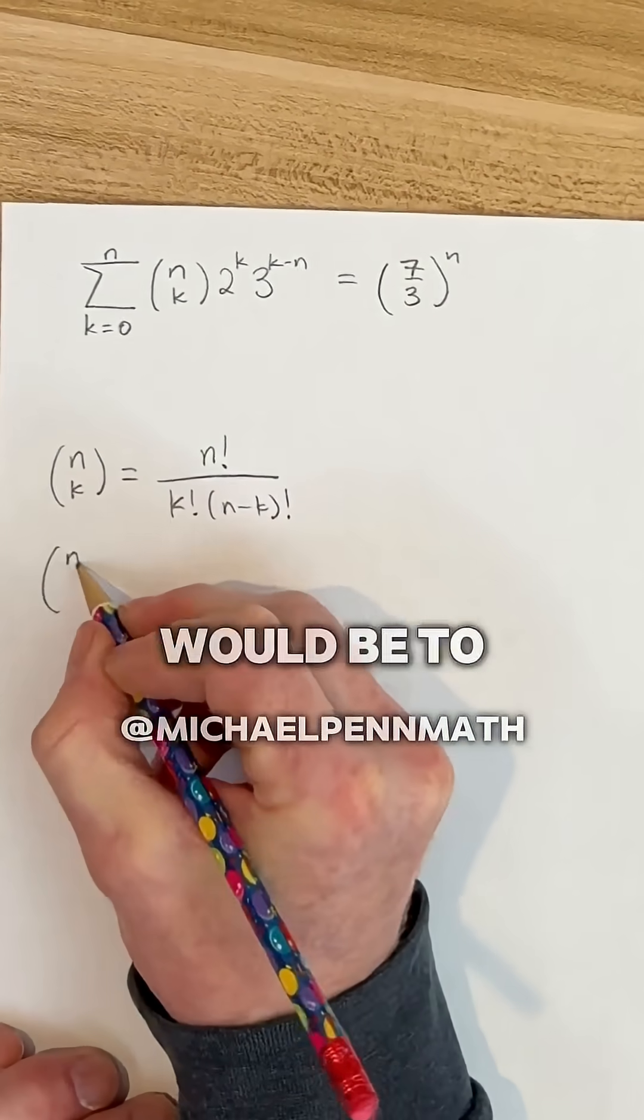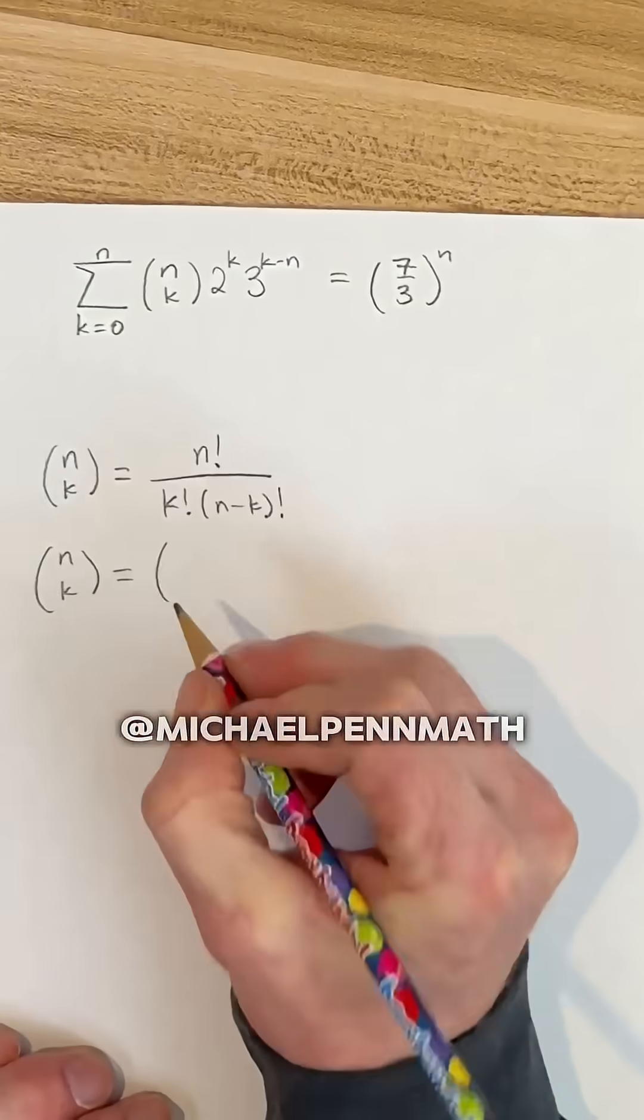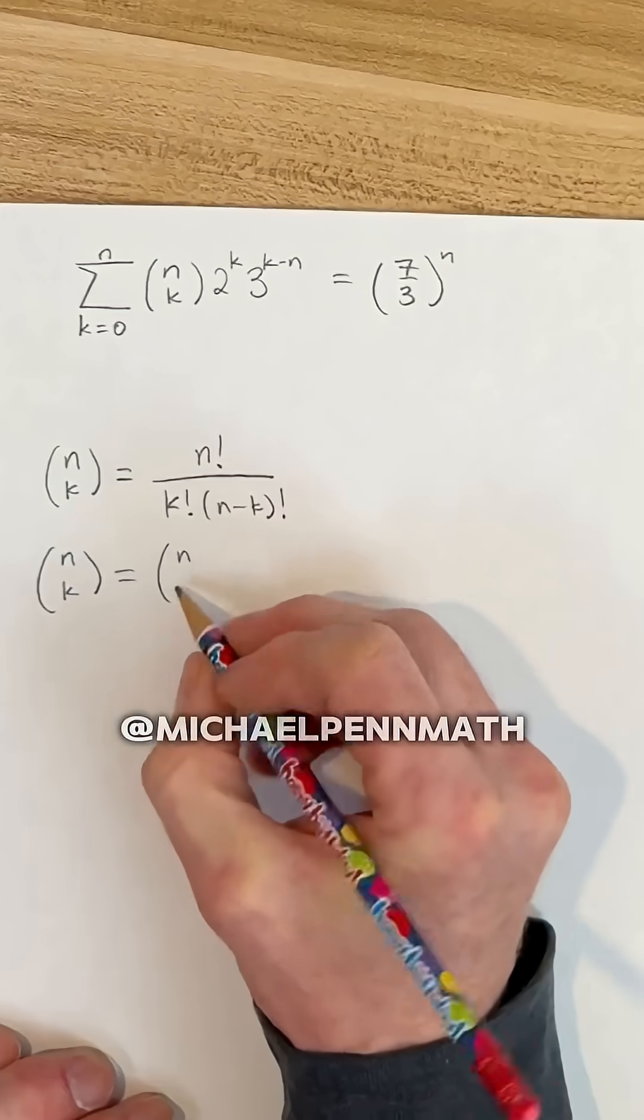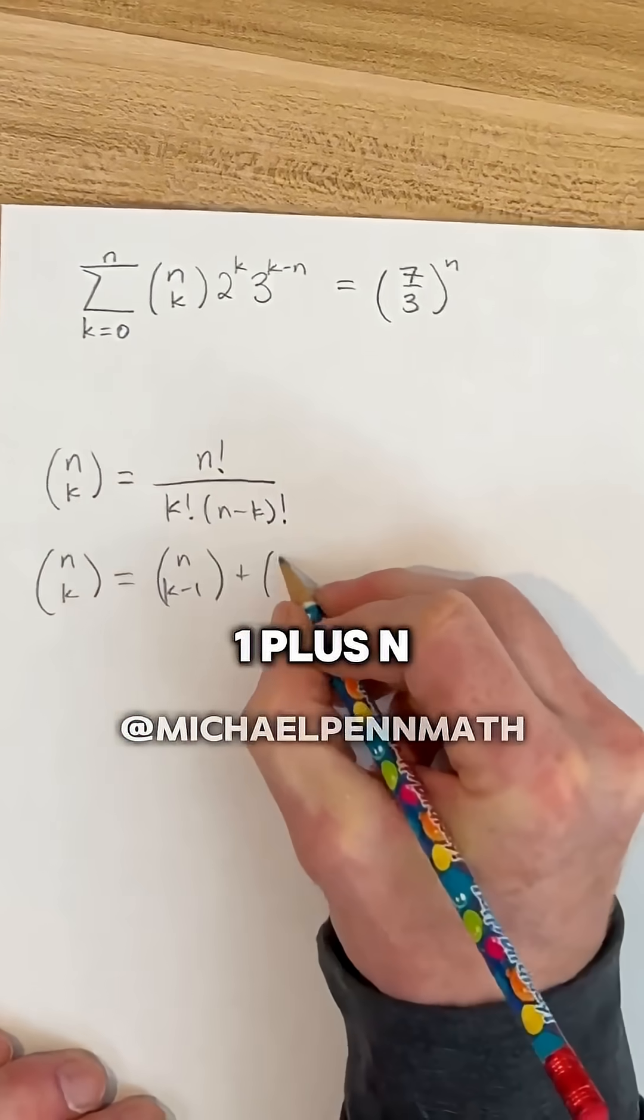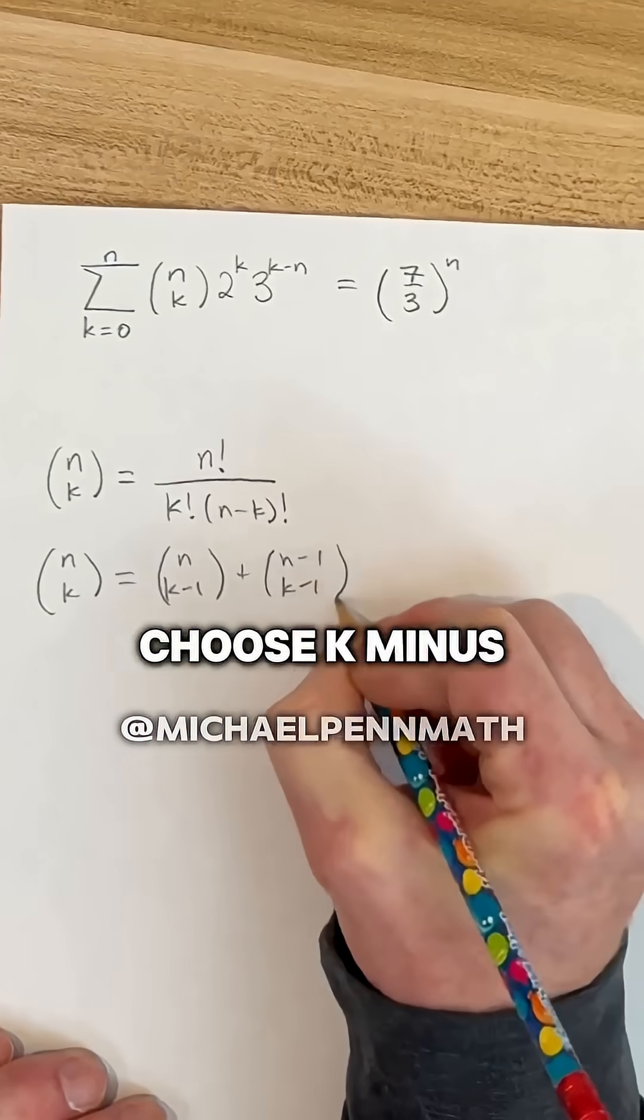The second thing would be to recall the recursion involving binomial coefficients. So we can write n choose k as n choose k minus 1 plus n minus 1 choose k minus 1.